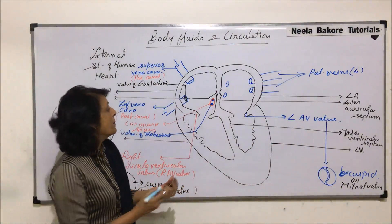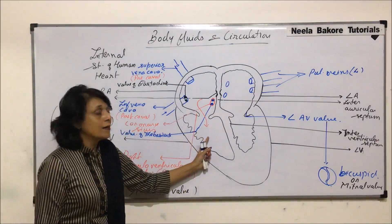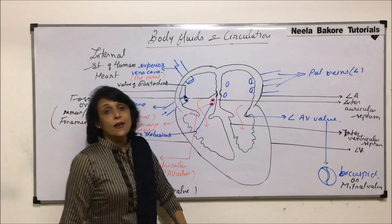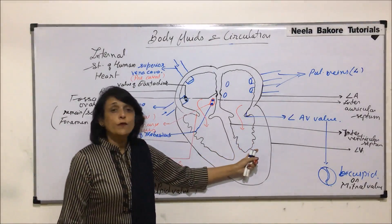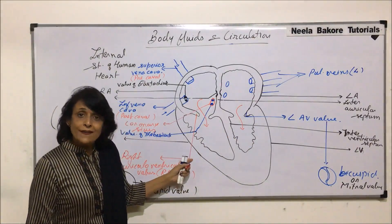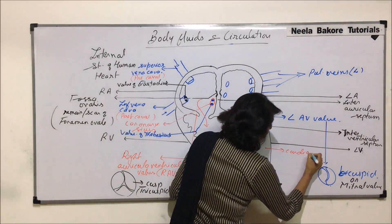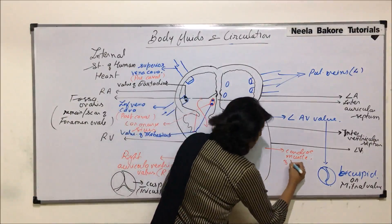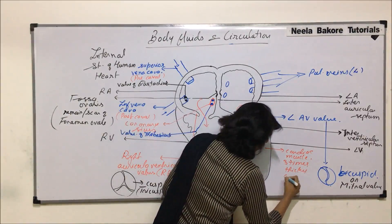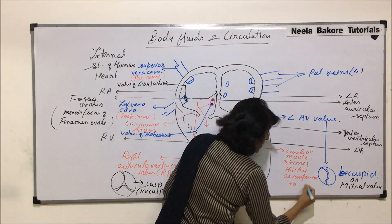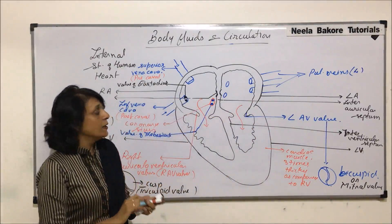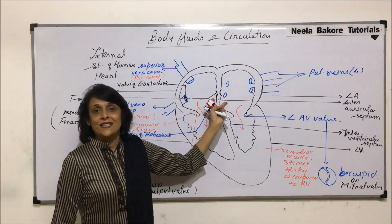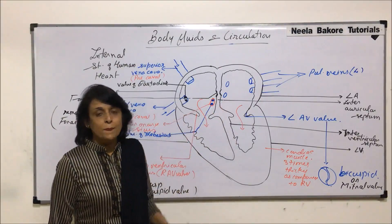From the right auricle, deoxygenated blood comes into the right ventricle. From the left auricle, oxygenated blood comes into the left ventricle. The wall of the left ventricle is thicker compared to the right one — it is made up of cardiac muscles and is 3 times thicker than the wall of the right ventricle. Auricles are receiving compartments and ventricles are pumping compartments.